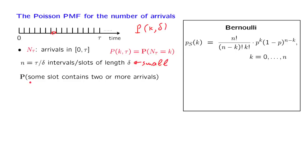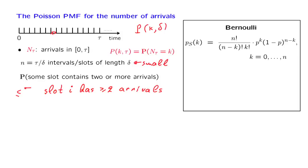Let us look at the probability that some slot — that is, any one of the slots — contains two or more arrivals. We're dealing with the union of the events that slot i has two or more arrivals. The probability of this event is less than or equal to the sum of the probabilities of the constituent events. This is an inequality we have seen before, called the union bound. I ranges over the different slots, and we have tau over delta slots, so there are that many terms being summed.